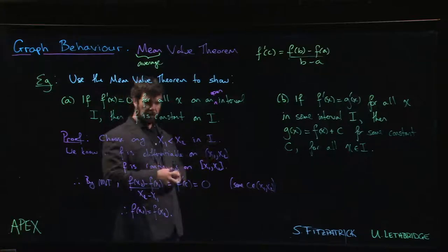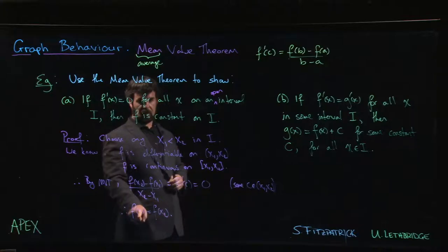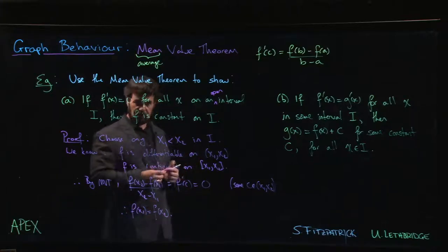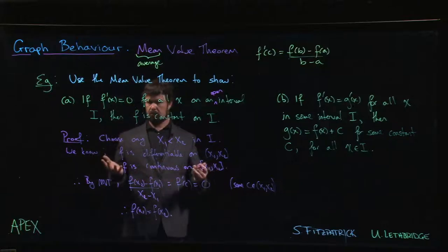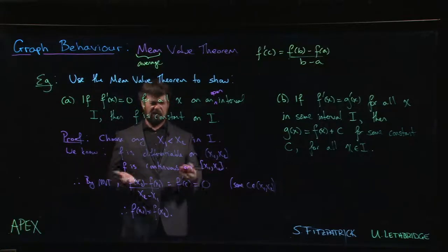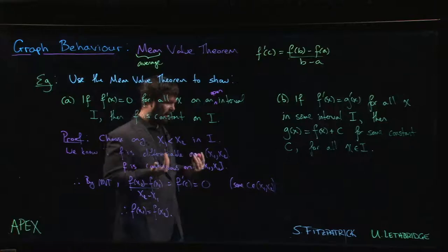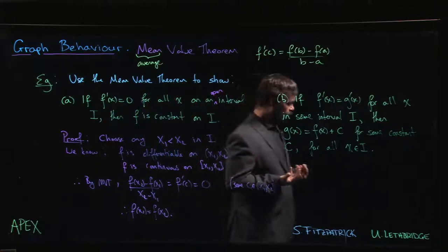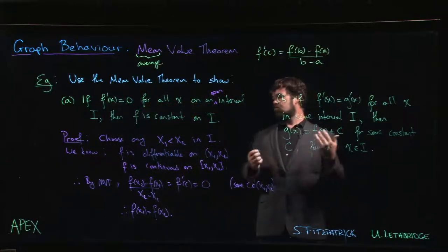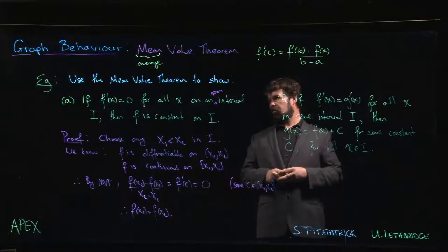And we're going to have that f at that number has to have the same value as f of x1. And so the only way you can guarantee that your function has the same value everywhere is if it's constant. In fact, that's really what it means for it to be constant - it has the same value everywhere. So that tells us that our function is constant on the interval.